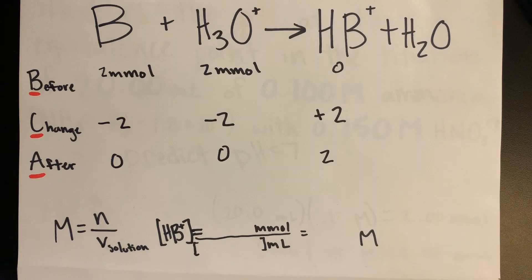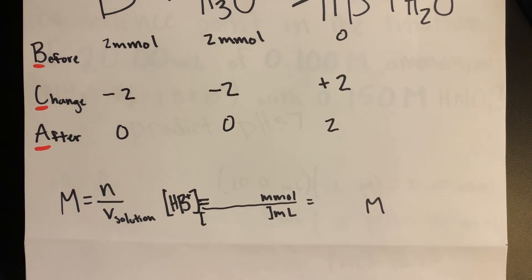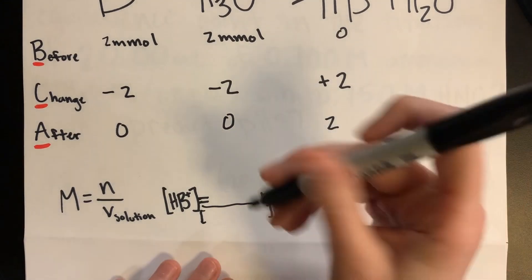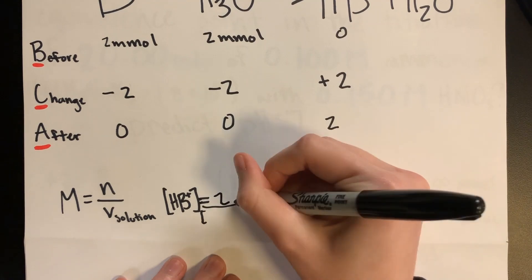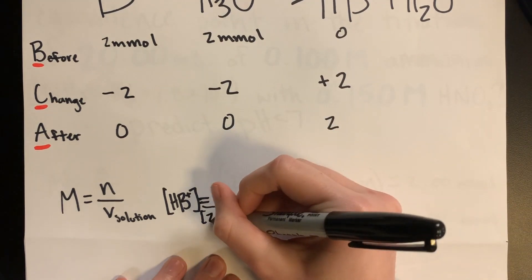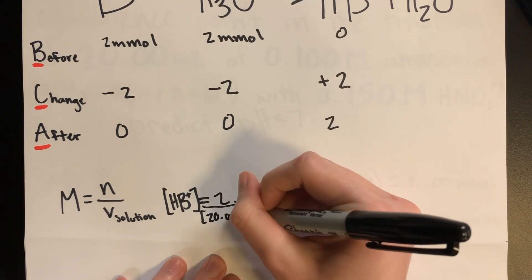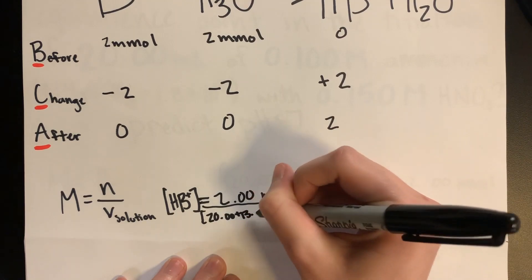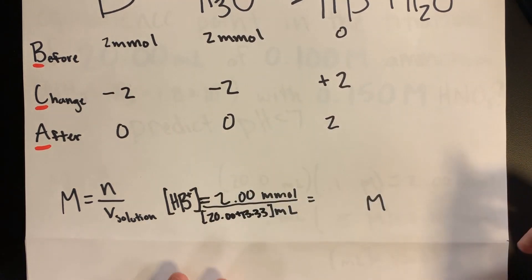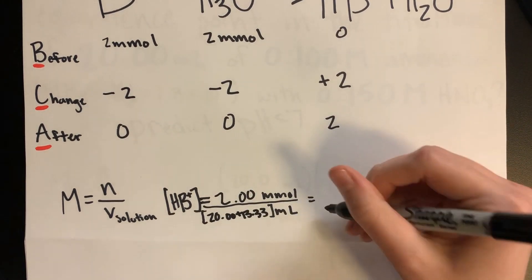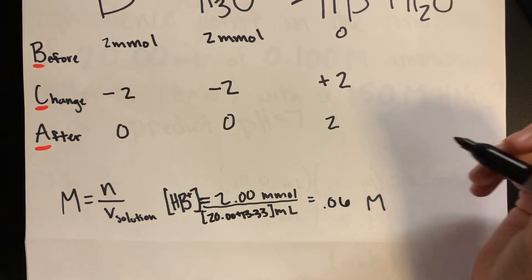Now that we have all the millimoles, we need to find the molarity of the weak acid, and to do that, we use the definition of molarity again. So we have 2 millimoles over 20 plus 13.33 milliliters, which is going to equal 0.06 molar.